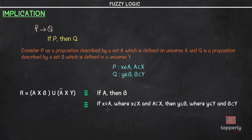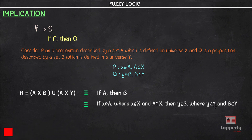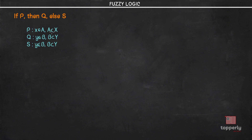That is, if an element x belongs to set A where x belongs to capital X which is universe X and A is a subset of universe X, then we can say that an element y belongs to set B where y belongs to capital Y which is universe Y and B is a subset of universe Y. Now consider a compound proposition expressed in a linguistic form as if p then q else s, where proposition p is defined as an element x belonging to set A, a subset of universe X; q is defined as an element y belonging to set B, a subset of universe Y; and proposition s is defined by an element y that belongs to set B, a subset of Y.